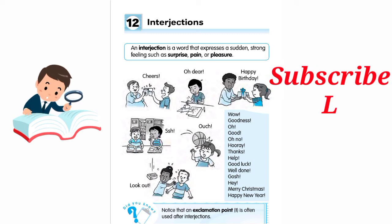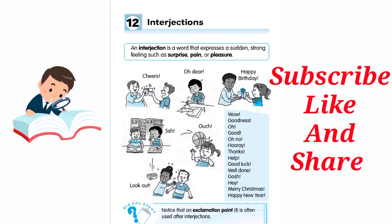An interjection is a word that expresses a sudden strong feeling such as surprise, pain, or pleasure. For example: wow, goodness, oh good, oh no, hooray, thanks, help, good luck, well done, gosh, hey, merry Christmas, happy New Year.